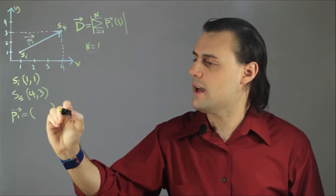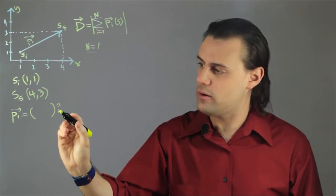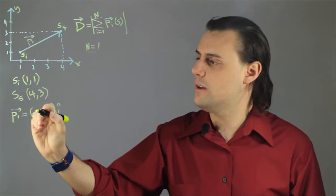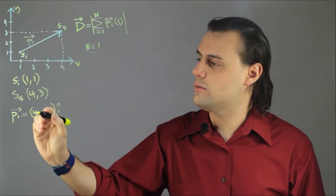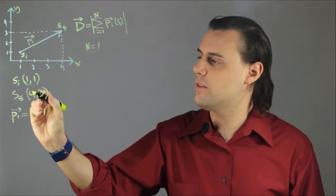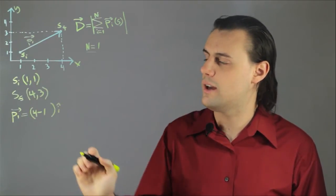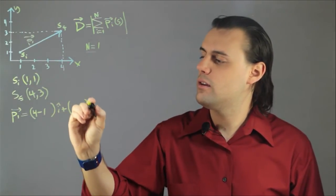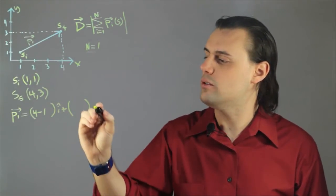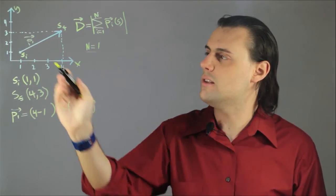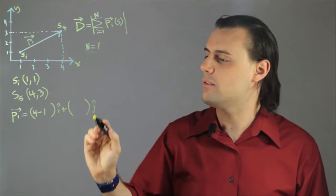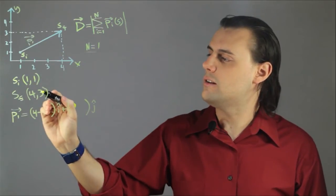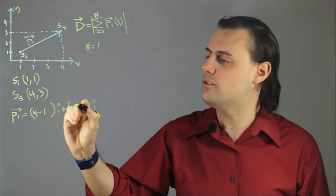I have, for the x component, i hat, which is a unit vector in the x direction, and the value is 4 minus 1—the final x position minus the initial x position—plus the corresponding magnitude and direction in the vertical direction, which I use j hat to denote the unit vector in that direction, and the magnitude is 3 minus 1.